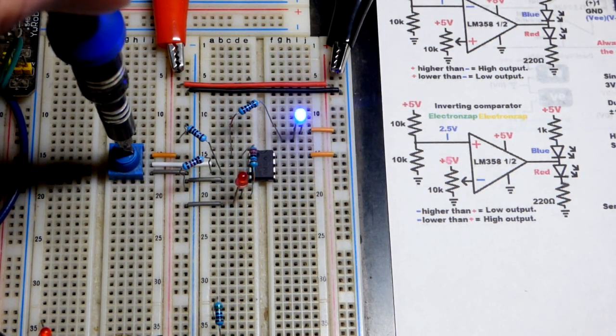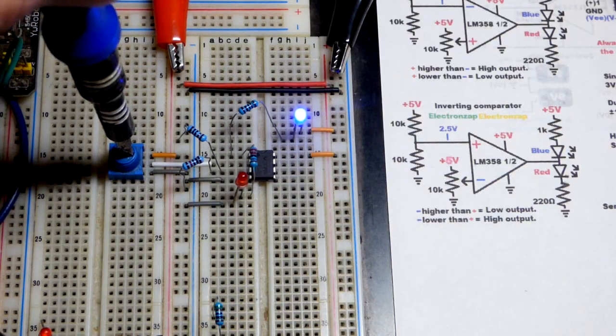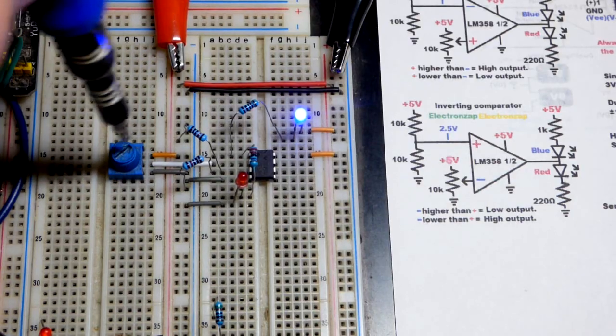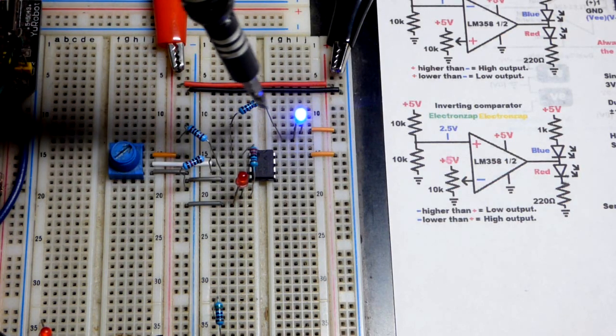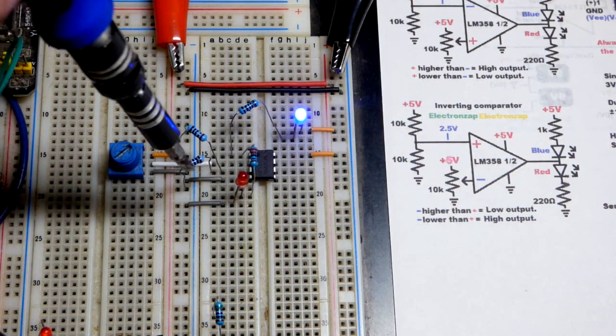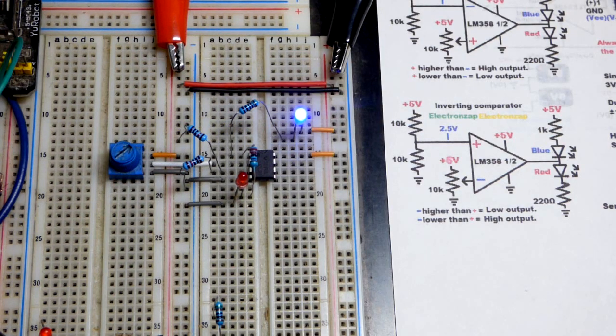When I break the halfway point, I get closer to the positive supply. Then the blue LED lights up. You can see we're at the positive supply, so is the blue LED.